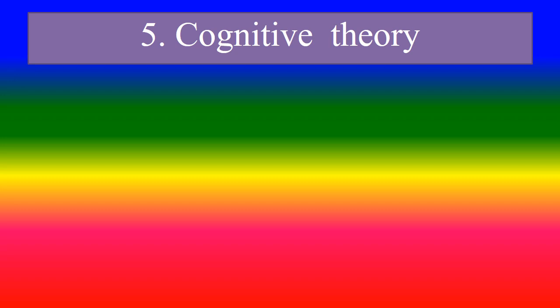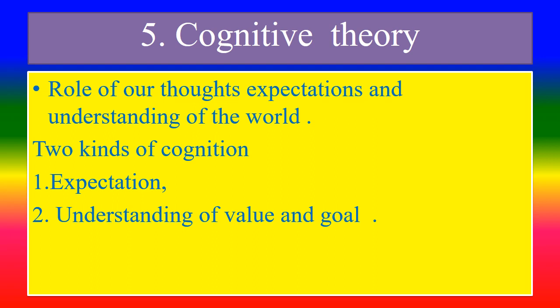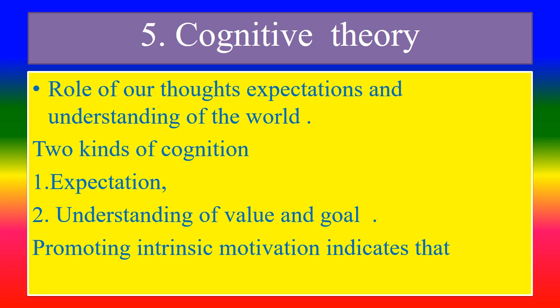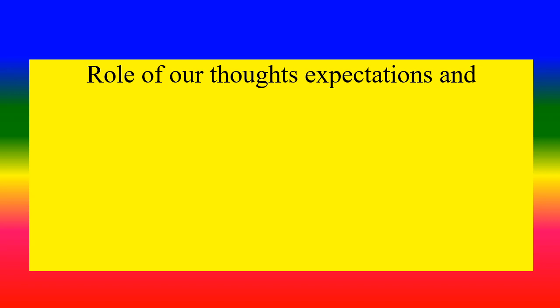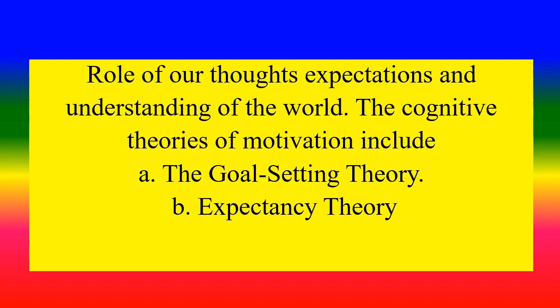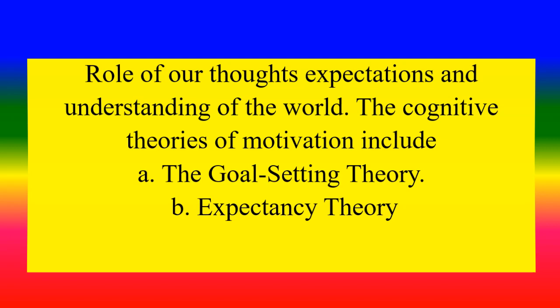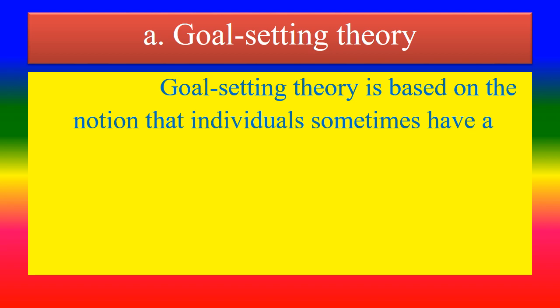Fifth: Cognitive Theory. This theory focuses on the role of our thoughts, expectations, and understanding of the world. There are two kinds of cognition: first, expectation; second, understanding of value and goal. Promoting intrinsic motivation is indicated over providing purely extrinsic reward. The cognitive theory of motivation includes: A. the goal setting theory, and B. the expectancy theory.